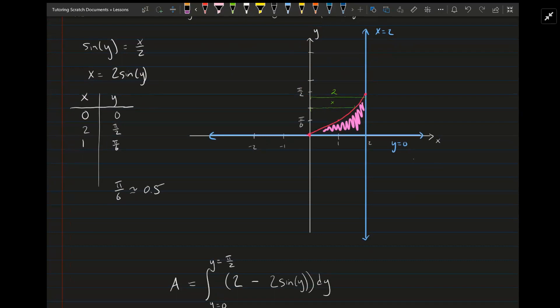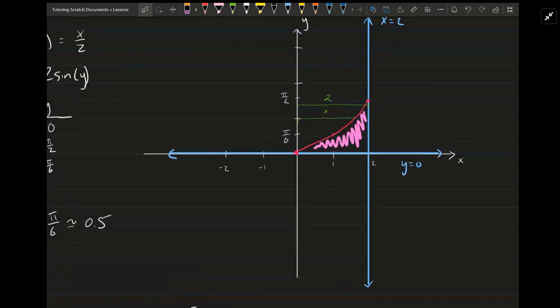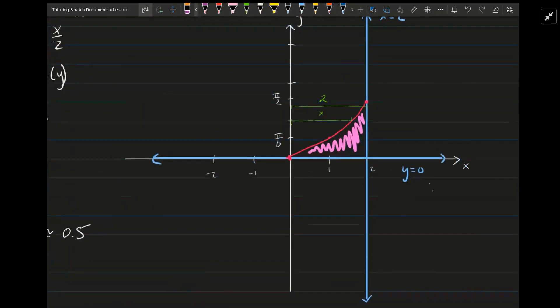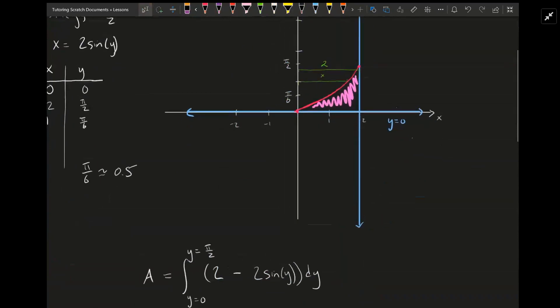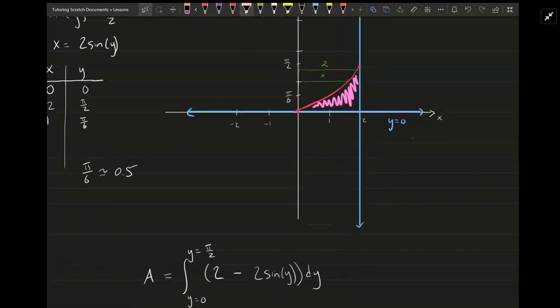So given those points, that allowed me to draw this picture here on the right. The pink curve is the one that we're talking about, this magenta color right here. So that's inverse sine of x over 2. We want to find this pink region because it's the area bounded by these three, the two blue lines and then this pink curve.